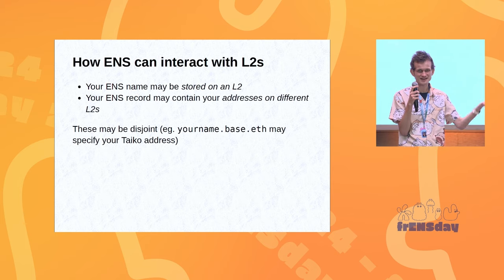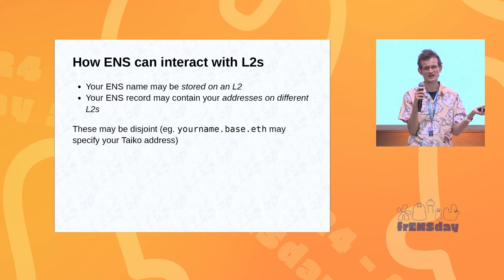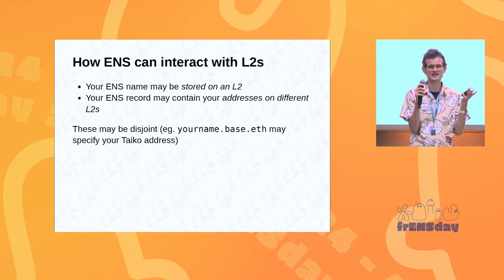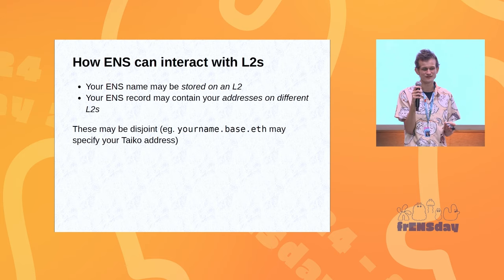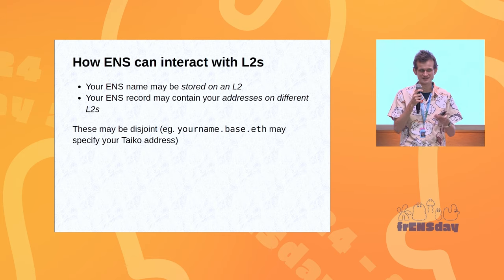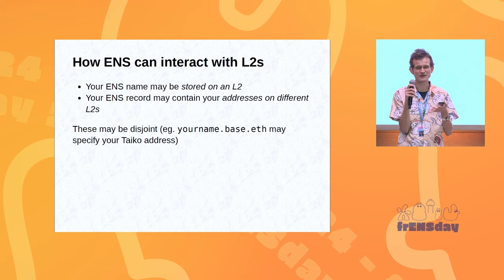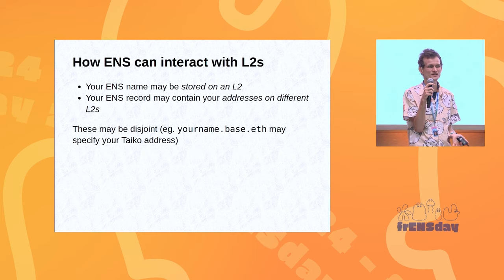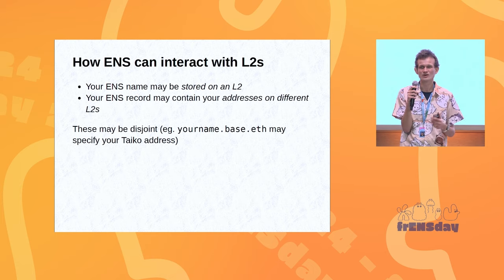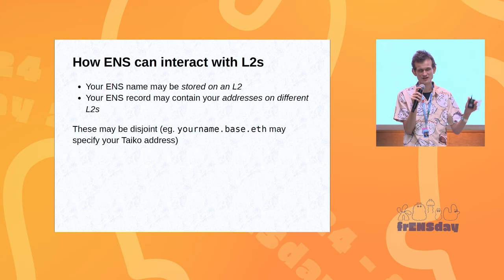That's one technique. The other technique, of course, is ENS itself moving to some kind of canonical L2 — ideally some kind of minimum-based rollup. And it seems like there is a future where some degree of both end up happening.